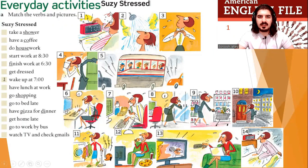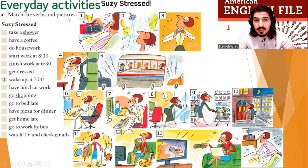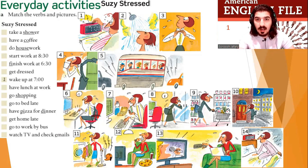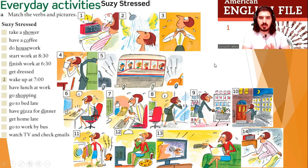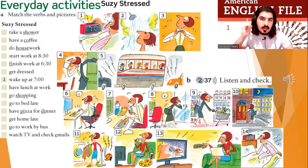Okay, everyday activities — Suzy's Stressed. Match the verbs and pictures. First, everybody look at the pictures. What do you see? The woman's name is Suzy. Is she happy or sad? Now match the pictures to the words. For example: 'take a shower.' Number one: wake up at 7 a.m.